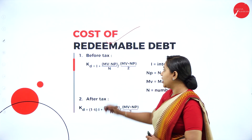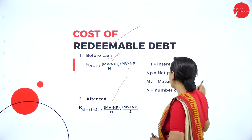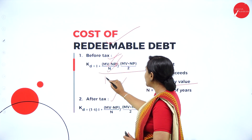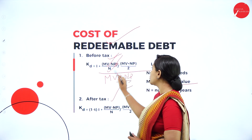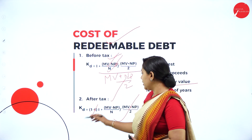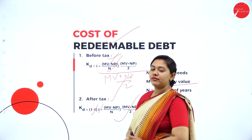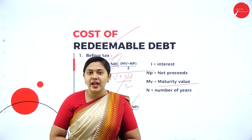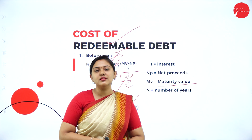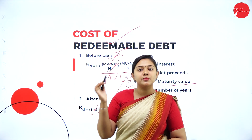The cost of redeemable debt formula before tax is: [Interest + (Maturity Value − Net Proceeds) / N] divided by [(Maturity Value + Net Proceeds) / 2]. For the after-tax formula, the only addition is multiplying the interest component by (1 − tax rate). The rest of the formula remains the same. These are the two formulas for redeemable debt before and after tax.